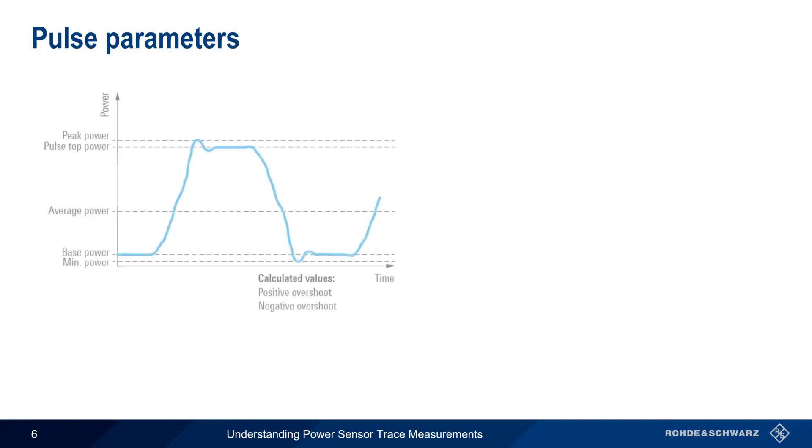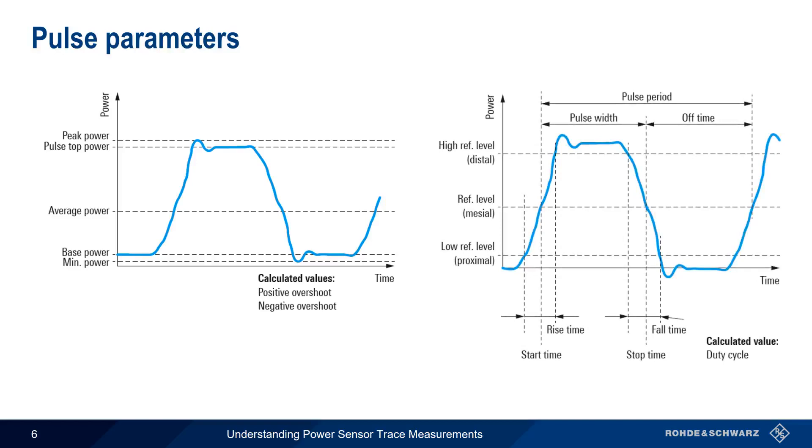There are many different parameters that can be automatically measured or calculated on pulse signals, so let's take a quick tour of the more important ones. Peak power, average power, and minimum pulse power should be fairly self-explanatory. In terms of timing, pulse period and pulse width should also be easy to understand. Pulse rise and pulse fall time are very commonly measured parameters. And finally, overshoot and undershoot are important because these phenomena are often seen in real-world pulses.